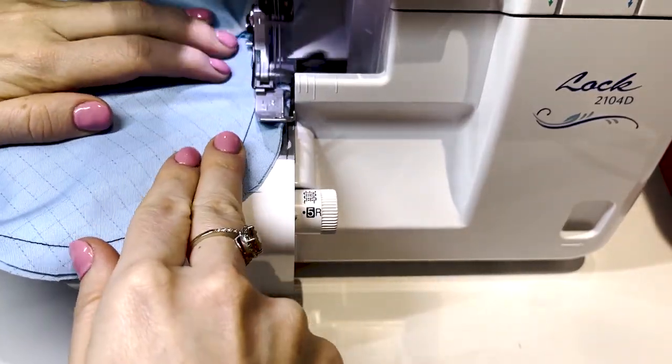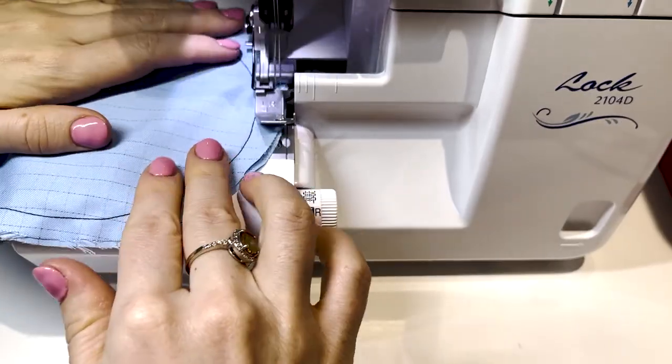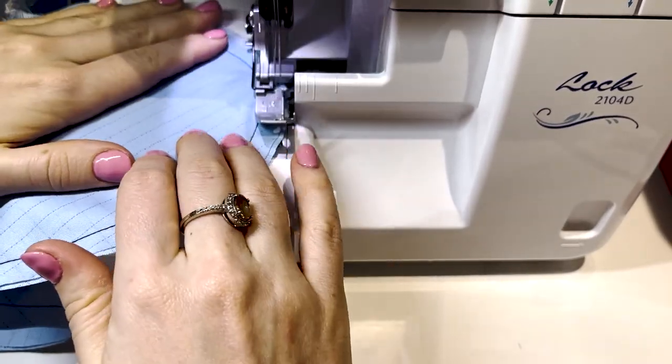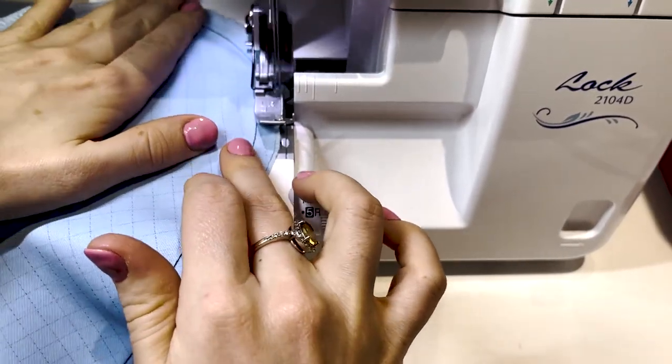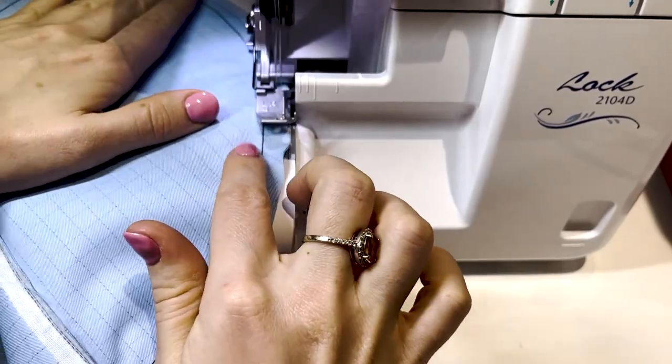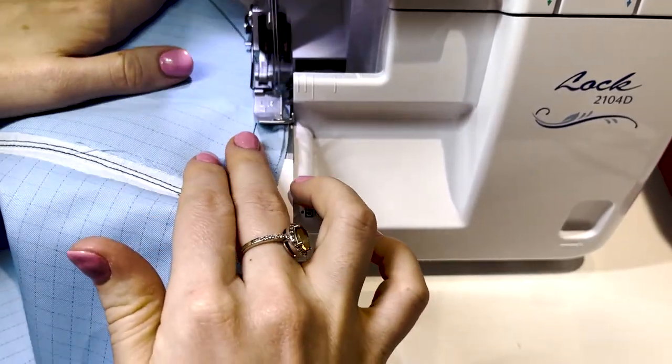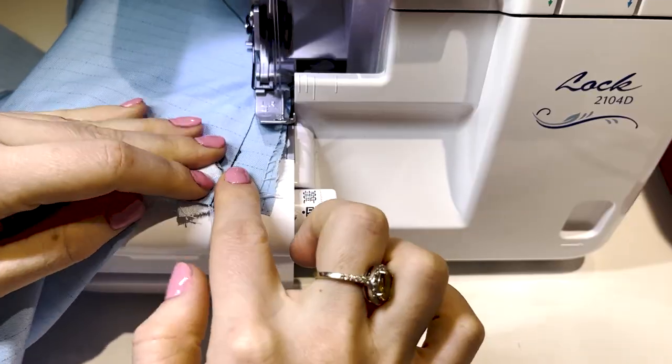Now we're going to repeat this process going around the pocket bag with your overlocker or your zigzag stitch if you are using a regular machine. Depending on your material, you may be able to use pinking shears for this.